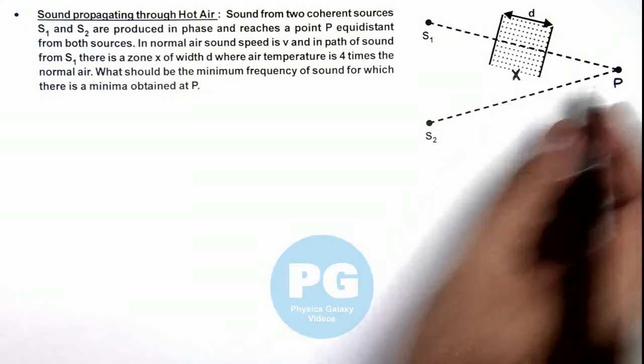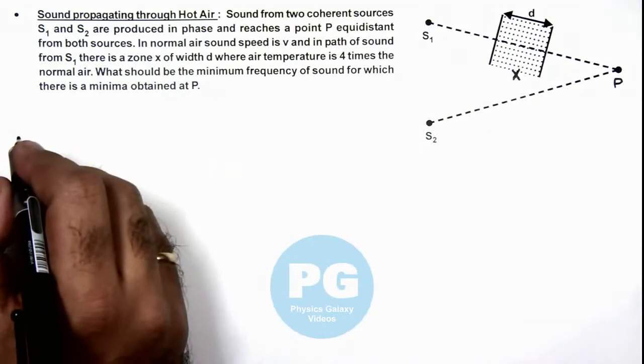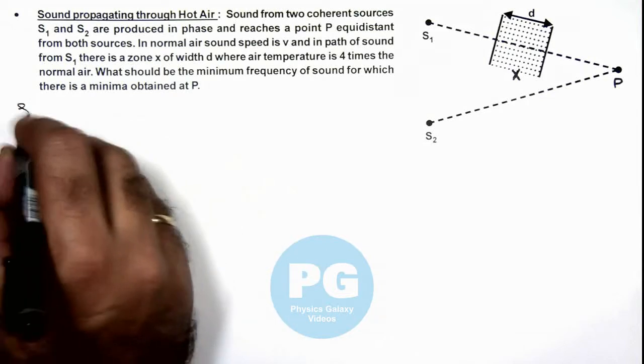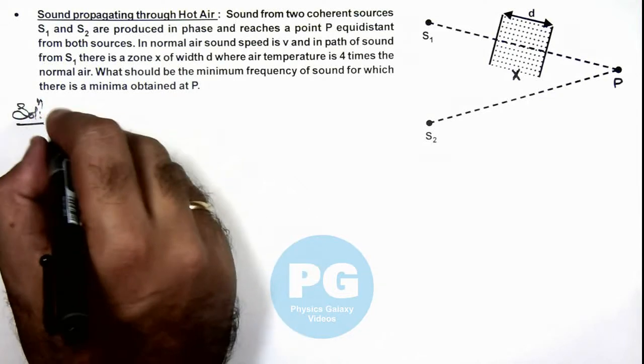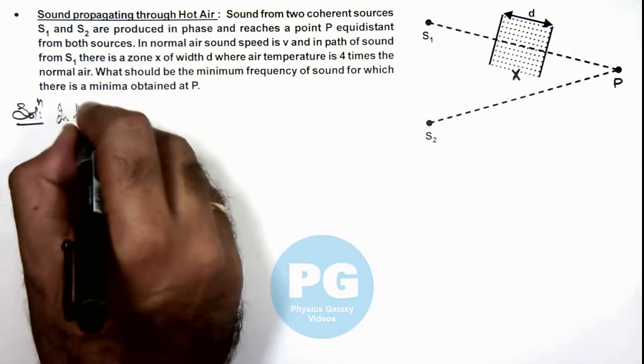So for minima, we'll be talking about the destructive interference of sound waves. So here, we analyze that in the hot air zone sound speed is given as v'.